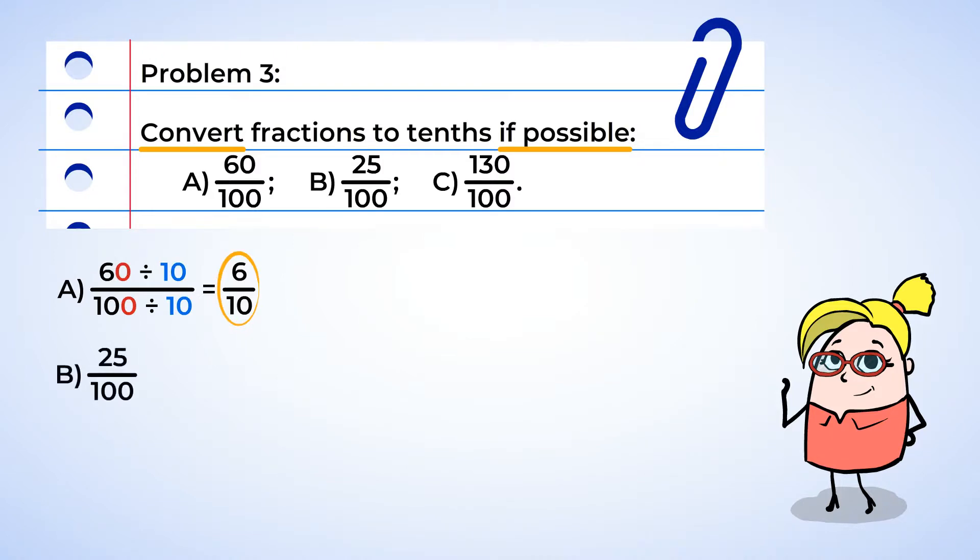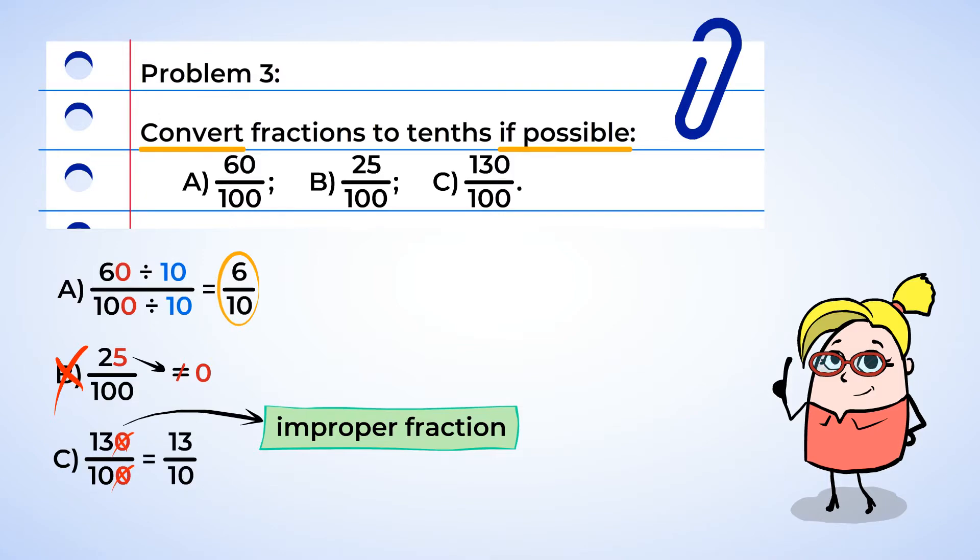Part B has a numerator of 25. That does not end in a zero, so we can't convert this fraction to tenths. Moving on to Part C. Part C has an improper fraction of 130 hundredths. Now since the numerator ends in a zero, we can convert it to tenths. Let's try that shortcut and just remove the zero on the end of the numerator and the denominator. Boom! Look at that! We have 13 tenths!